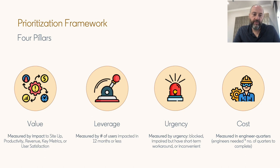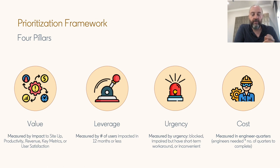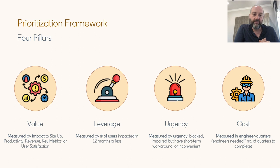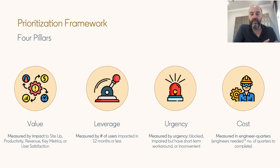The prioritization framework is based on four key pillars. The first is Value — measuring the impact of the ask. It's flexible enough to cover different use cases: infrastructure capabilities, product revenue, key metrics lift, and user satisfaction. The second is Leverage — how many users will be touching this feature in the next 12 months. The third is Urgency — are you blocked, inconvenienced, or do you have a workaround? And lastly, we consider the Cost of implementing the feature in terms of engineering effort.